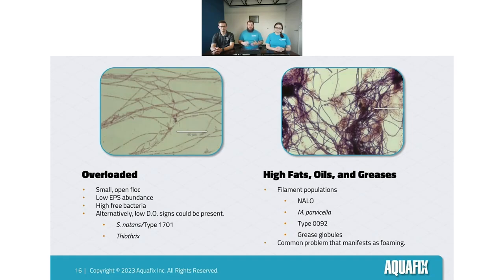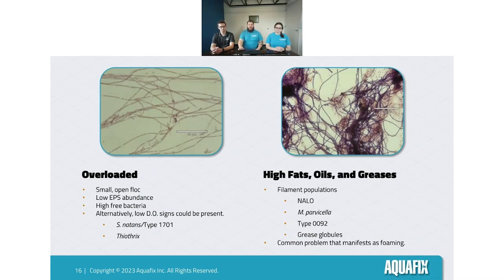High fats, oils, and greases: this is a very common plant type that we see often. It manifests as a foam layer high in filaments that enjoy fats, oils, and greases. These filaments can bind up FOG because of the structure of their cell walls. These are often going to be Nocardia-like organisms, Microthrix parvicella, and Type 0092. Sometimes you can physically see grease globules under the microscope, but oftentimes these aren't present even if you have FOG issues.